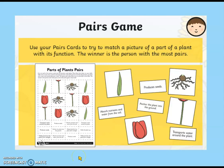Moving on to our first task. In your packs you should have a pairs game. You're going to chop up all the pictures and the captions, turn them all upside down, and then one at a time with someone in your family, turn a card over and try to match the picture to the definition. For example, what transports water around a plant? That would be the stem. If you've got the picture of the stem and the matching caption, you've got a pair and you get to keep them. When all the cards are gone, the winner is the person with the most pairs.